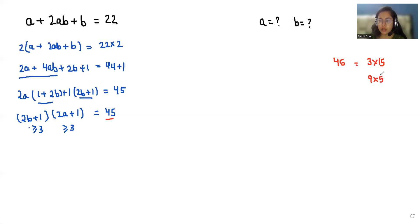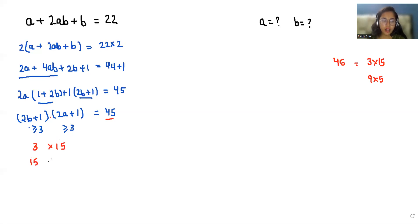So we have two factor pair options. Since the brackets are in multiplication, the possible cases are: (2b+1, 2a+1) = (3, 15), (15, 3), (9, 5), or (5, 9). These four cases can be our answer.